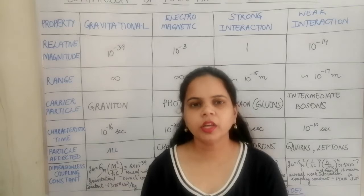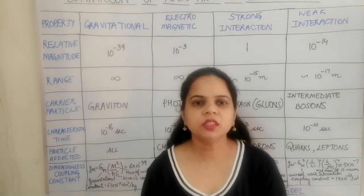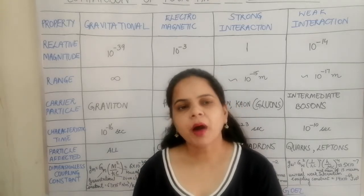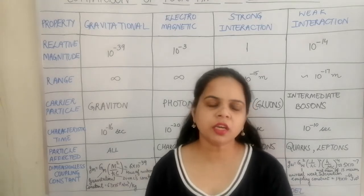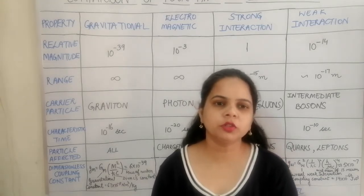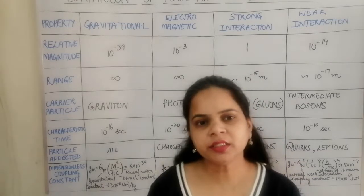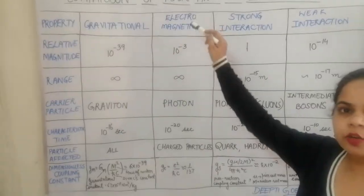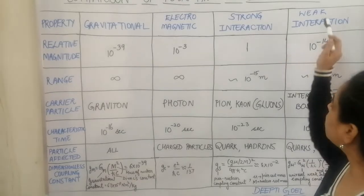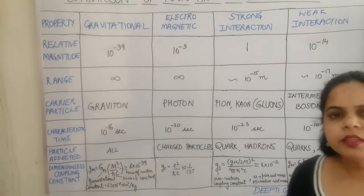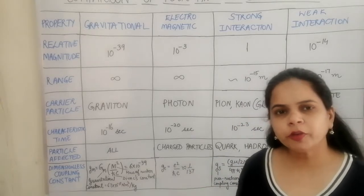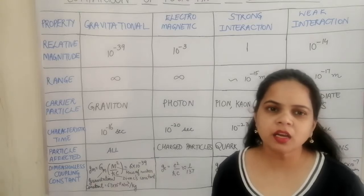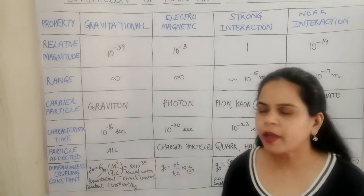Hello students. Today we are going to discuss the types of interactive forces present in nature. The particles present in nature interact with each other with four kinds of forces. The four types of interactions are the gravitational forces, the electromagnetic forces, the strong forces, and the weak forces. Not all particles have all four interactions — it depends upon the particle being affected.